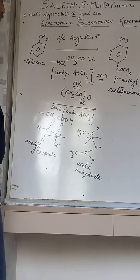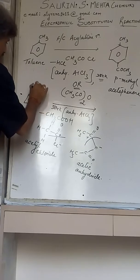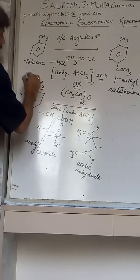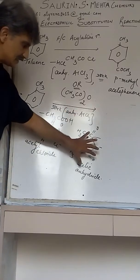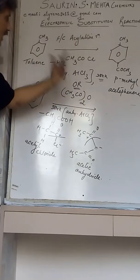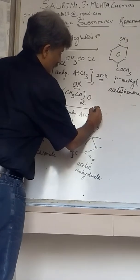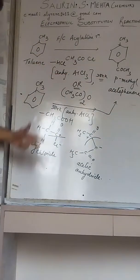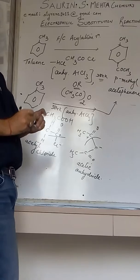So the only change that you can consider in these two reactions of toluene with the respective acetyl chloride and acetic anhydride is the byproduct. If it is acetic anhydride, you have acetic acid. If it is acetyl chloride, you will have HCl. So this is what you get when you have the acylation reaction carried out for toluene.